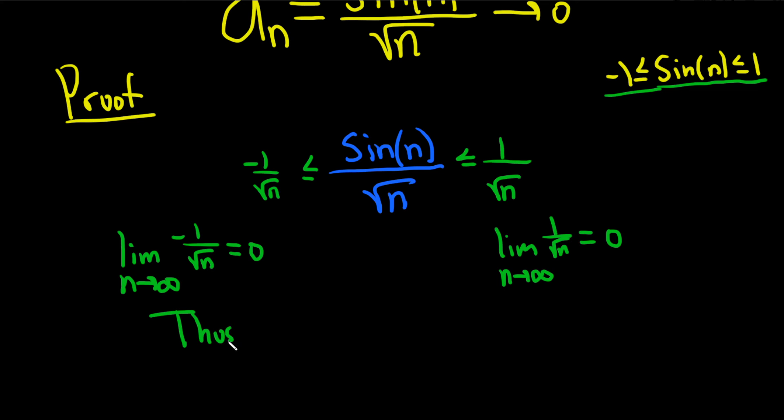Thus, the limit as n approaches infinity of sin(n) over sqrt(n) is equal to zero, and this is by the squeeze theorem.